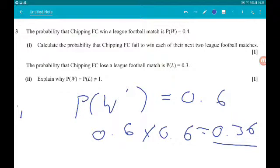So okay, number two. The probability that Chipping FC lose a league match is P(L) = 0.3. We want to explain why the probability of win and the probability of losing is not equal to 1.